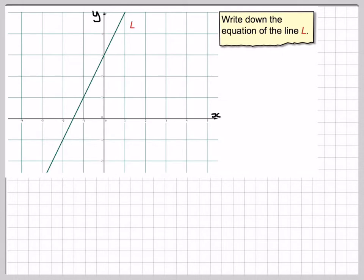Now all straight line graphs are of the form y equals mx plus c. Now m stands for the gradient, the slope, and c stands for the y-intercept.